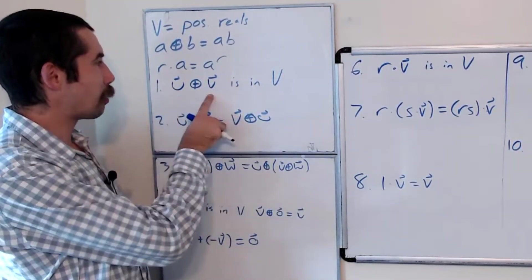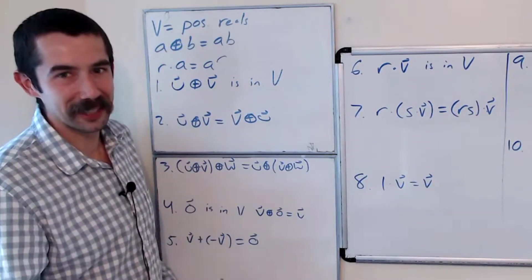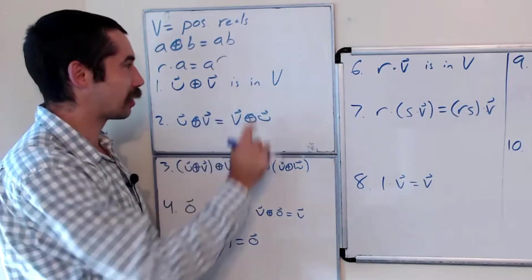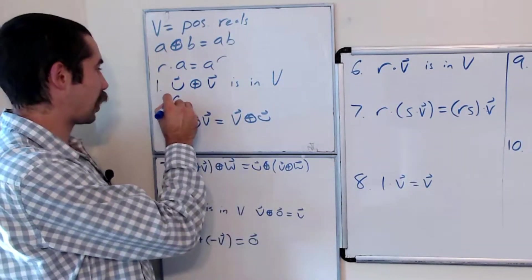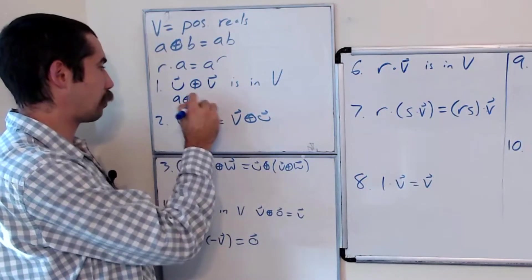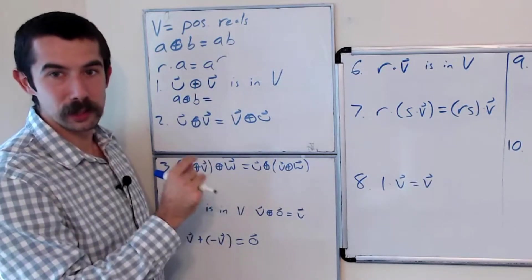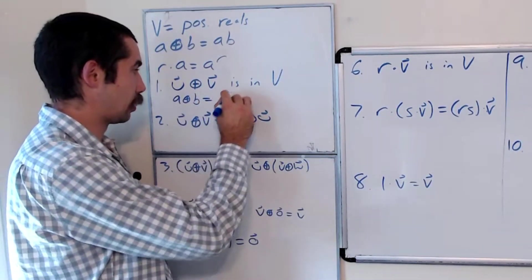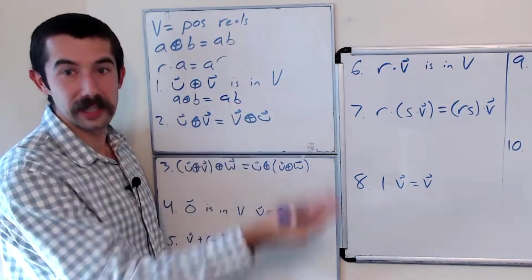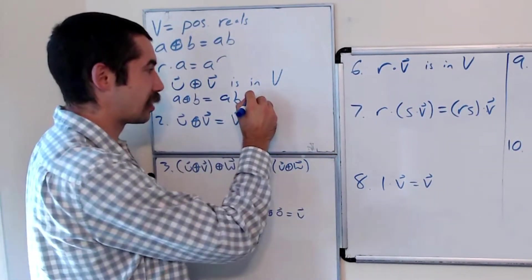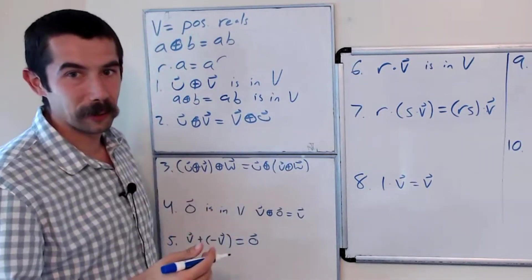The first thing we want to show is if we add two vectors, or two of these—I'm going to use the term vector because I know it's a vector space—but if we add two elements in V, we should stay in V. So what happens if we take two positive real numbers and add them together? By definition, A⊕B is AB, and a positive real number times a positive real number is a positive real number. So this is in V. So condition one holds.